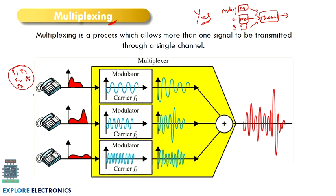Here is an example of multiplexing. There are three telephones — telephone one, telephone two, and telephone three. The voice transmitted through each telephone is the modulating signal. These three signals are low frequency audio signals lying between 20 Hz to 20 kHz. They are given to the modulator, which takes a high frequency carrier and modulates the signal.